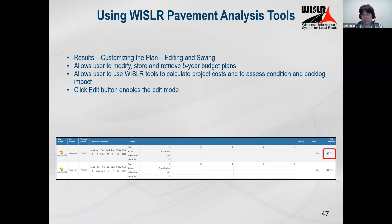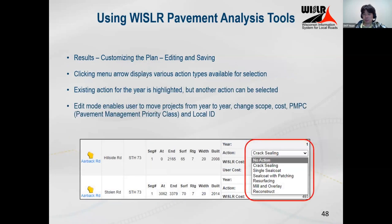Clicking on an action creates a drop-down box letting you select any action for that pavement type — crack sealing, single seal coat, resurfacing, mill and overlay. This list changes based on your pavement type: gravel roads get only gravel-type actions, and concrete gets a different set of actions tailored for concrete. You can also change the PMPC pavement management priority class and add a local ID or label to your segment.